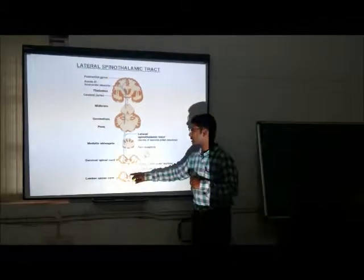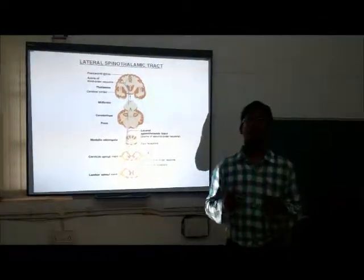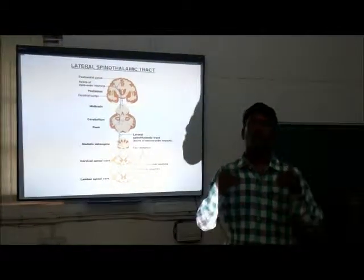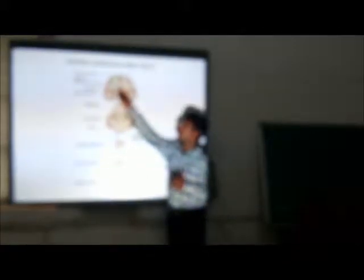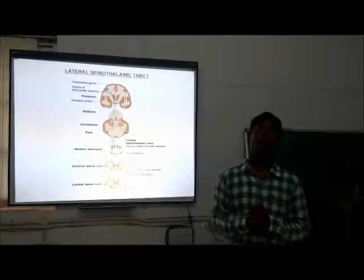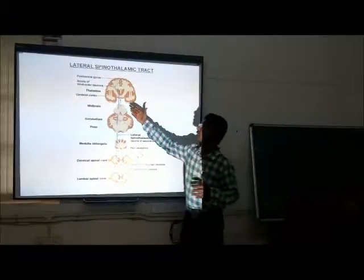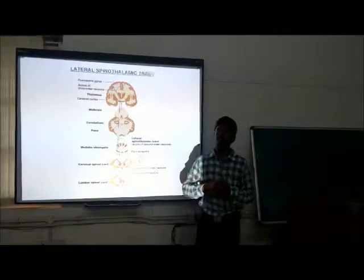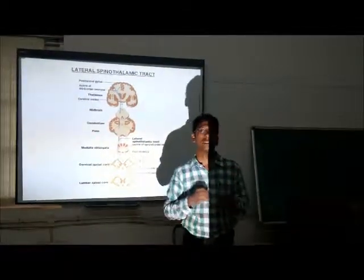This tract travels upward through the remaining segments of the spinal cord, then enters the medulla oblongata, pons, midbrain, and finally enters the thalamus. The third order neuron originates from the thalamus, synapsing at the nucleus of the thalamus, and terminates in the postcentral gyrus of the cerebral cortex. This tract mainly carries pain and temperature sensation.